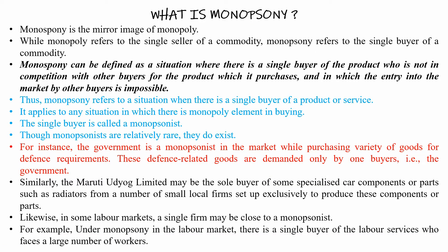What is Monopsony? Here in the first line, it says that monopsony is the mirror image of monopoly. While monopoly refers to the single seller of a commodity, monopsony refers to the single buyer of a commodity. Monopoly is a market with a single seller or single producer, whereas monopsony is a market with a single buyer of a particular commodity. So monopsony means there is a single buyer where there is a large number of sellers — the sellers are many, but the buyer is one. That is monopsony.